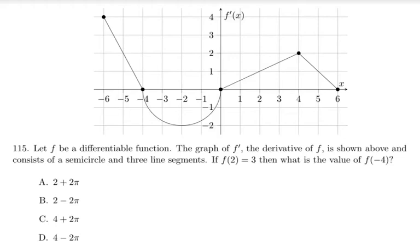In this question from AP Calculus Review Exam, they say let f be a differentiable function. The graph of the derivative of function f is shown above and consists of a semicircle and three line segments. If f(2) is given to be equal to 3, then what is the value of f(-4)?